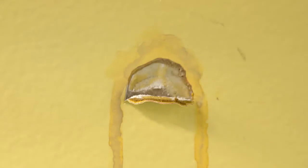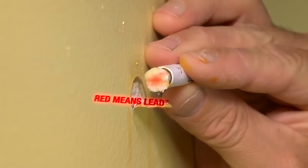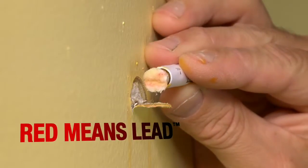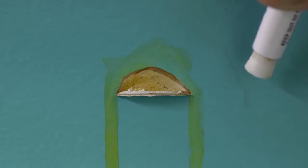If lead is present, a pink or red color will develop along the edges of the cut, flap or swab tip, usually within 30 seconds. Red means lead. If the edges of the cut area and the edges of the flap remain unchanged after 30 seconds, lead has not been detected.